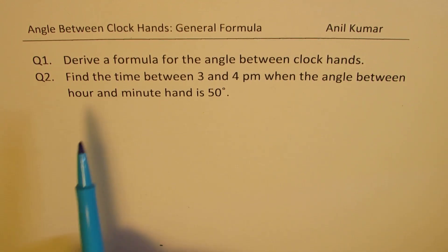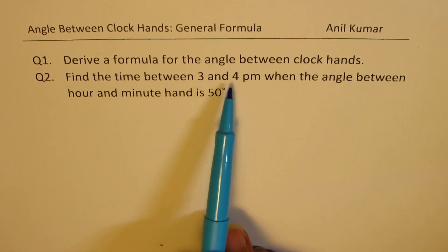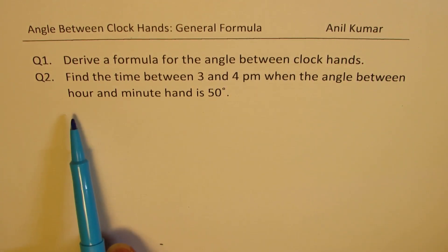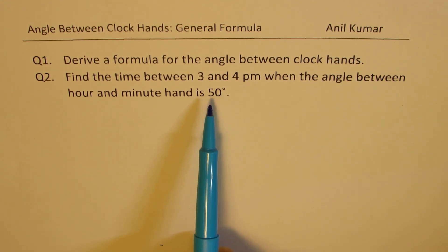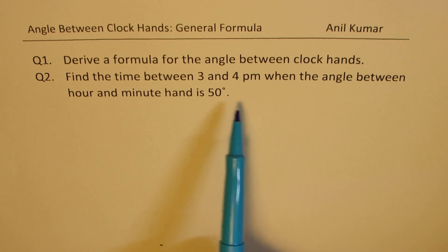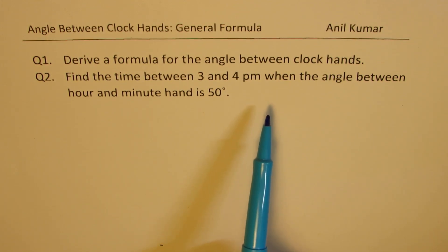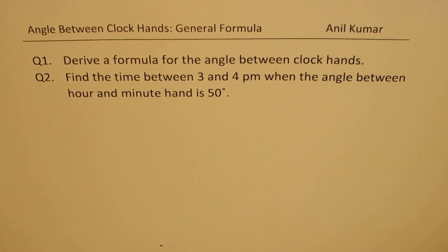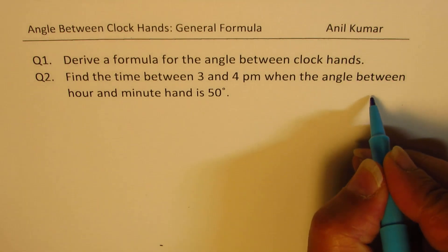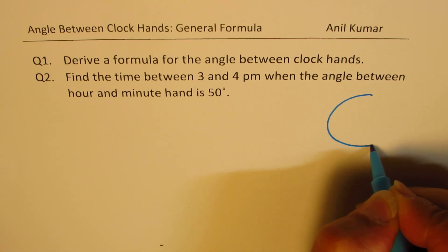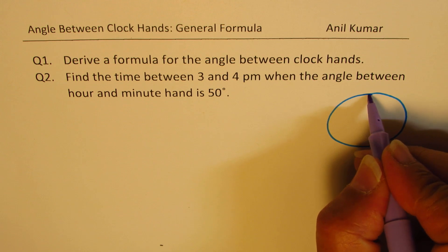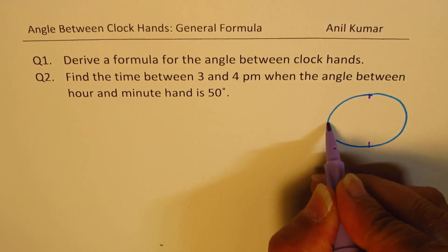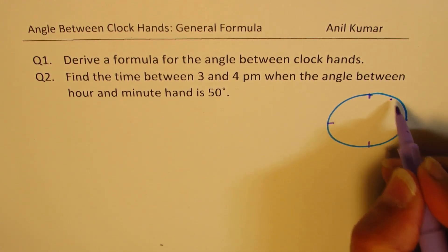This is question number two: find the time between 3 and 4 p.m. when the angle between the hour and minute hand is 50 degrees. To solve this question, we should have a relation between the angle and the position of the hour's and minute's hand. So it becomes very important for us to know this formula; otherwise, solving this kind of question is difficult. So let's look into our clock for a moment.